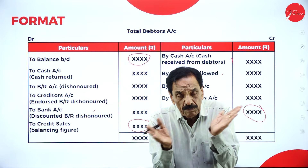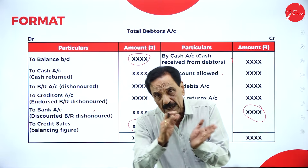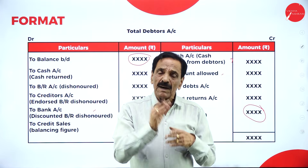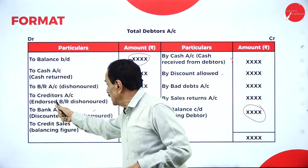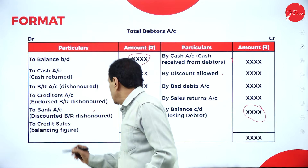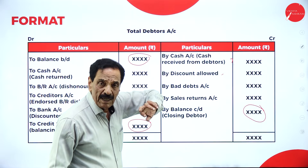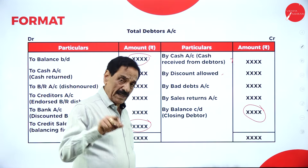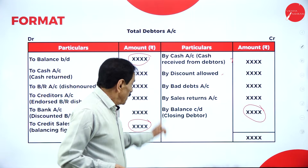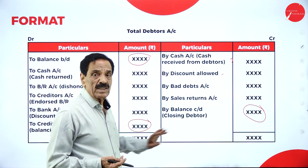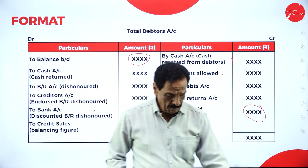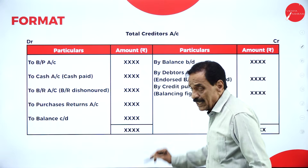To summarise the debtor account format: debit side has balance brought down (opening debtor), BR accepted, cash paid to debtor, BR dishonoured via bank discounted, and credit sale. Credit side has: cash received from debtor or customer, bank cheque received, BR received, discount allowed, bad debt, sales return, and closing debtor. The missing figure may be credit sale or closing debtor.